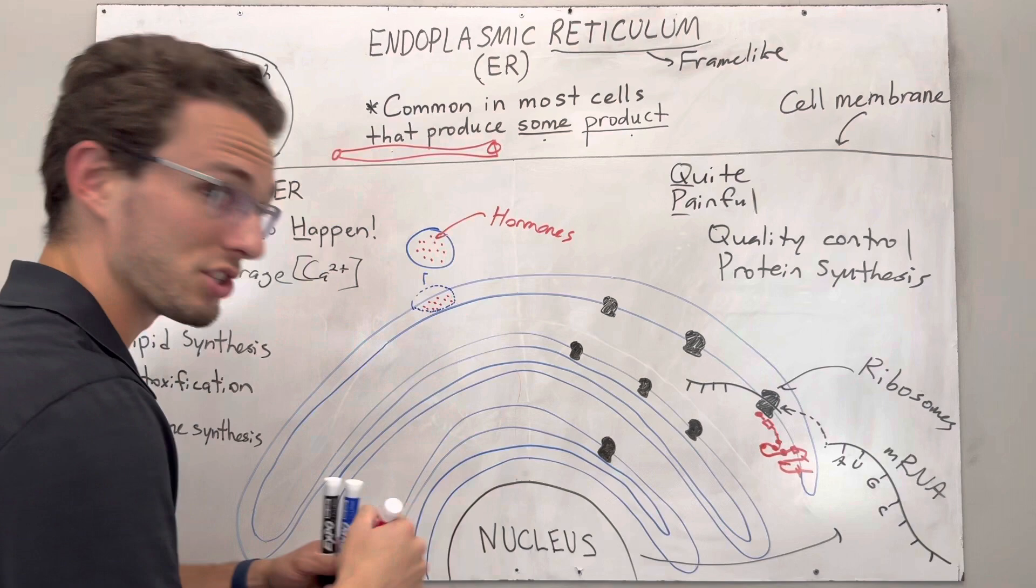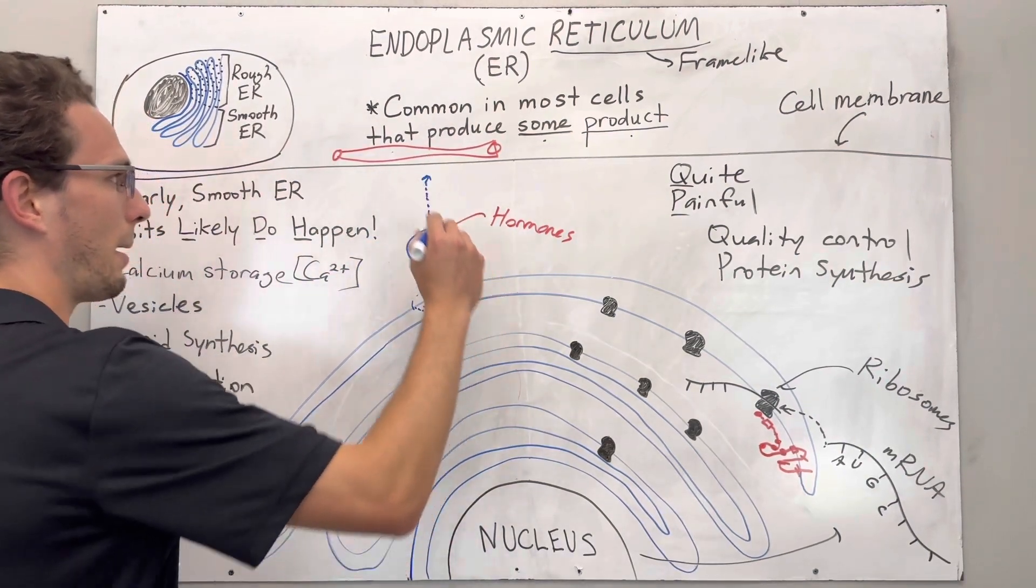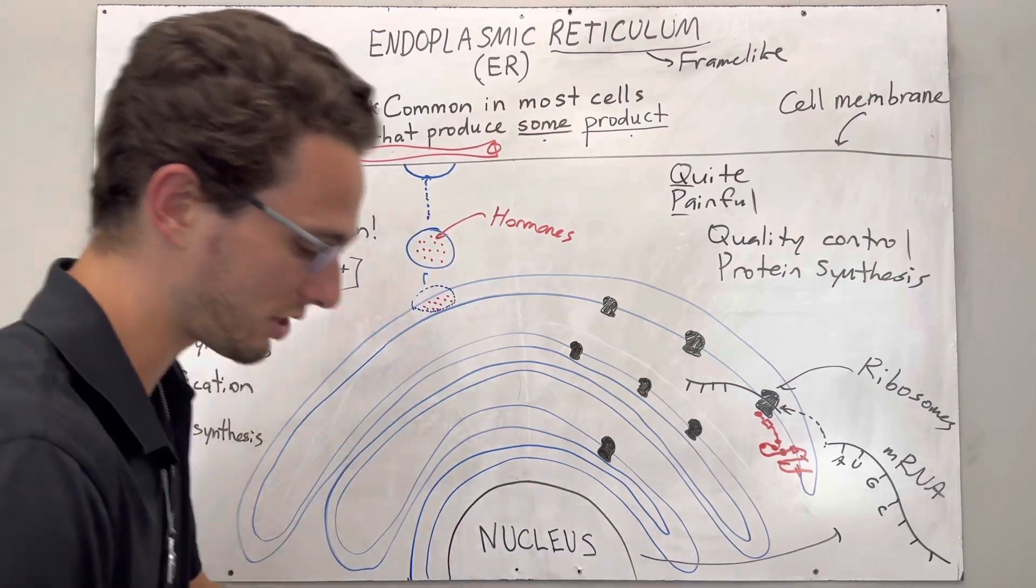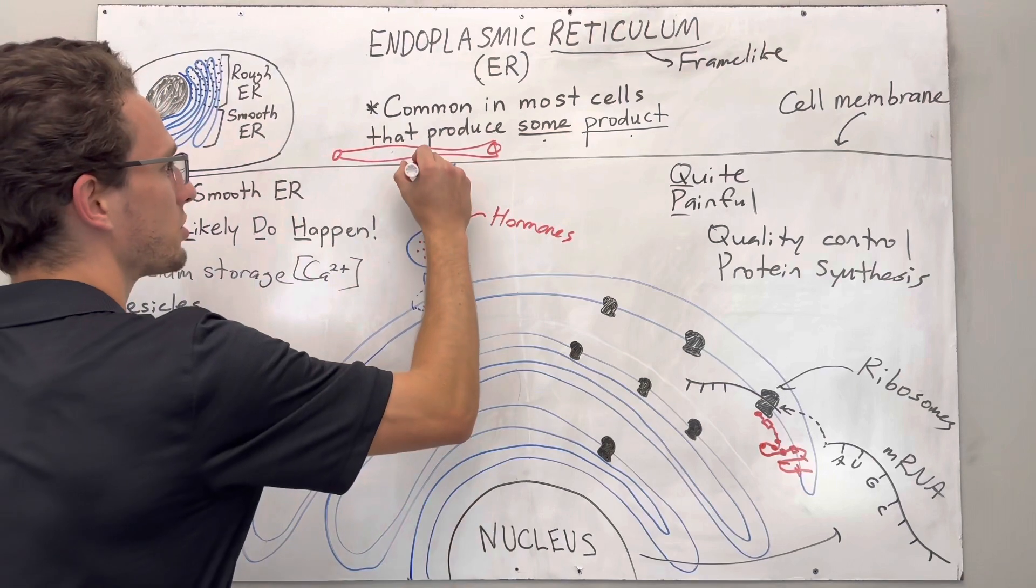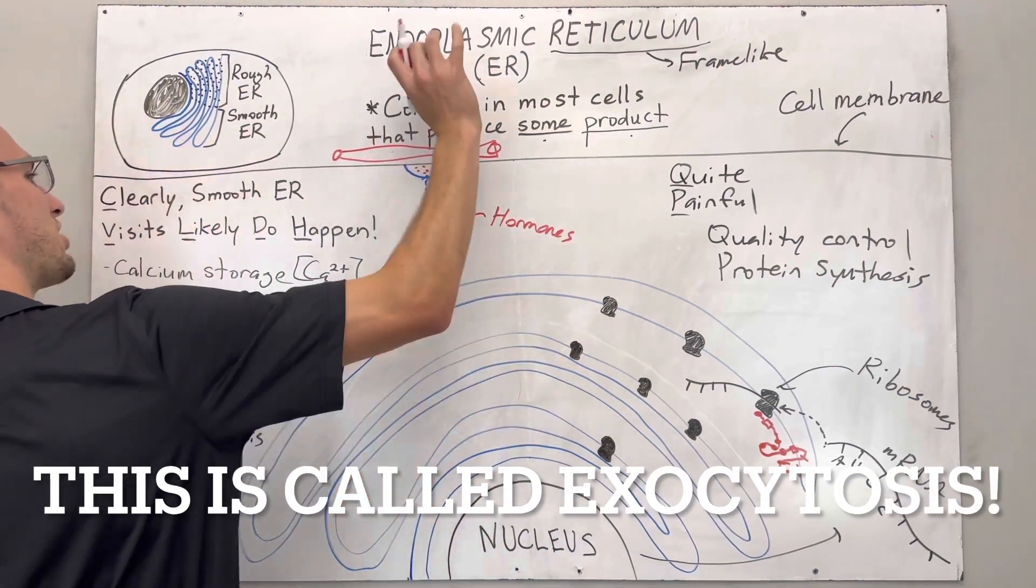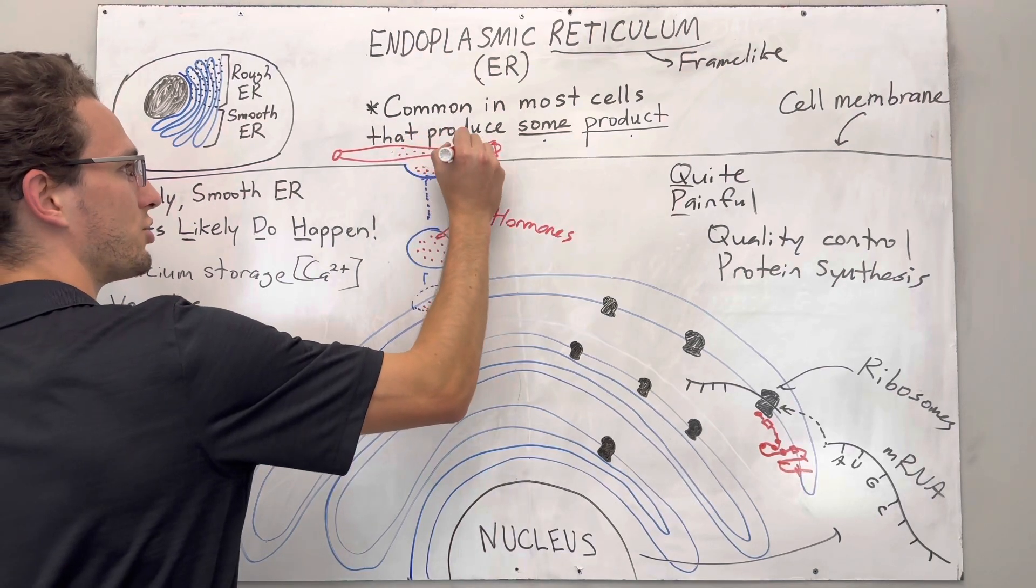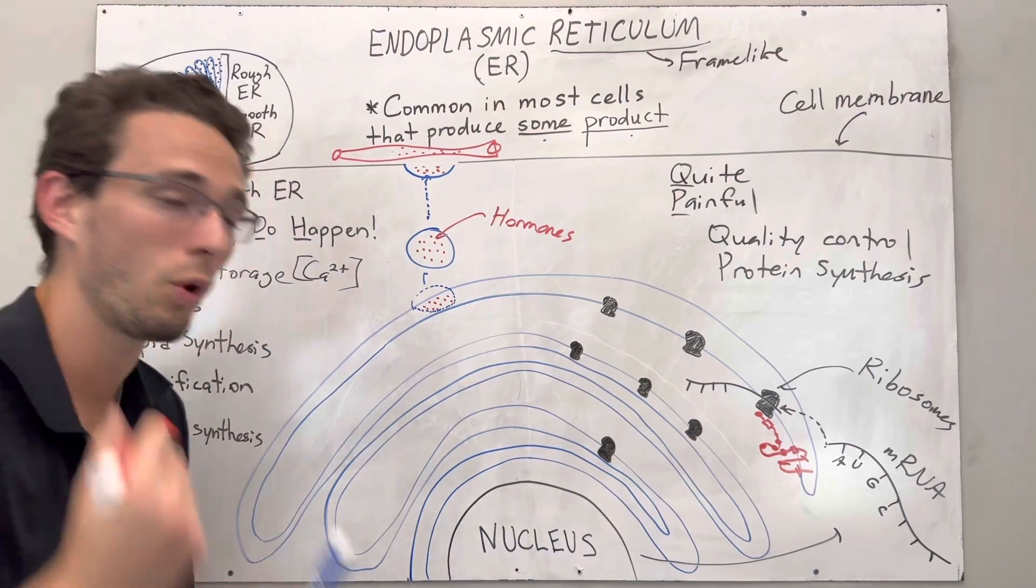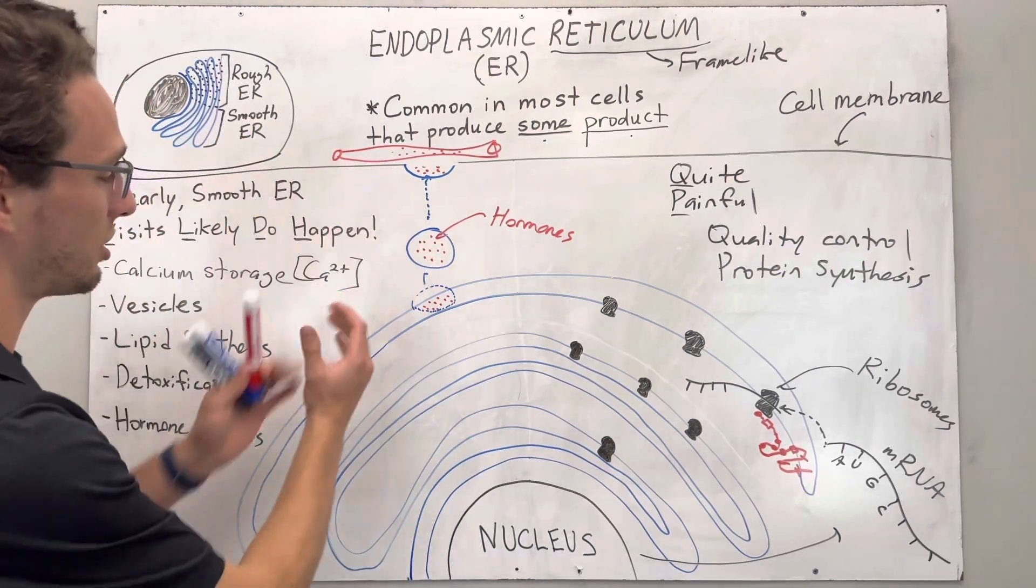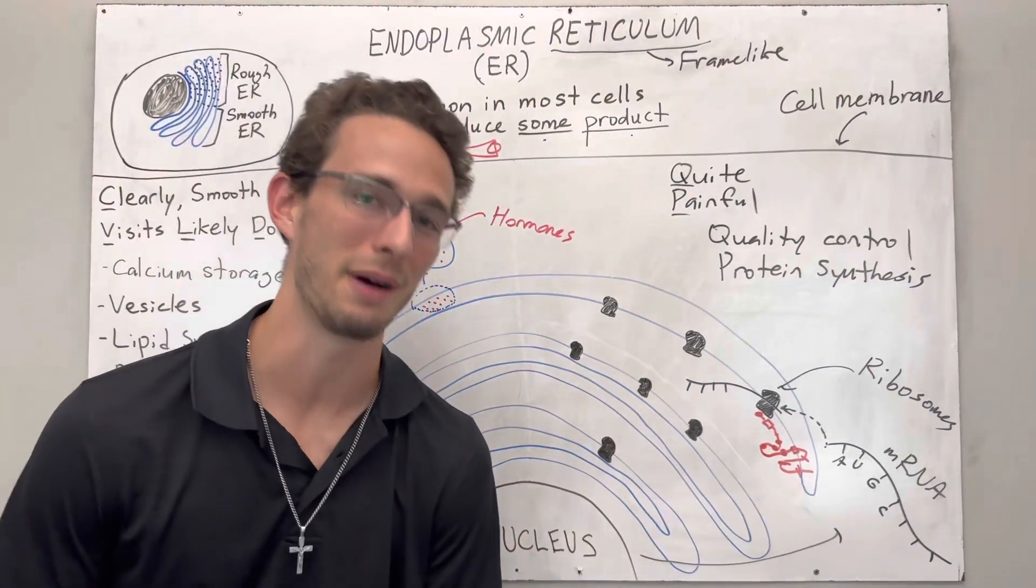Once this happens, this vesicle is going to move up to the cell membrane and actually fuse with it to the process called exocytosis. So once it fuses here, it's going to be exocytose, that means exiting the cell and eventually dump into the bloodstream. So this is one main function of the smooth endoplasmic reticulum in action, forming the vesicle with the product, sending it out of the cell to help the body. Wonderful.